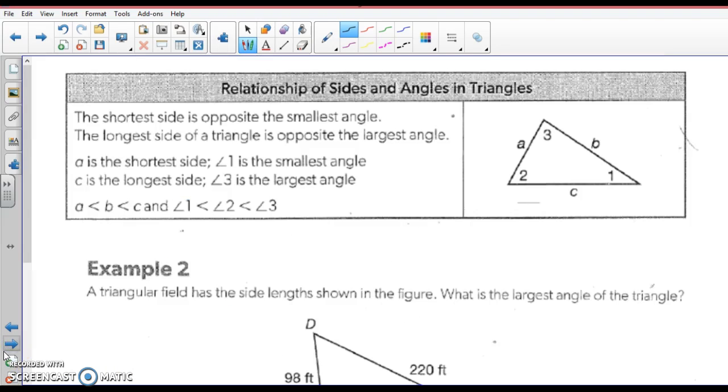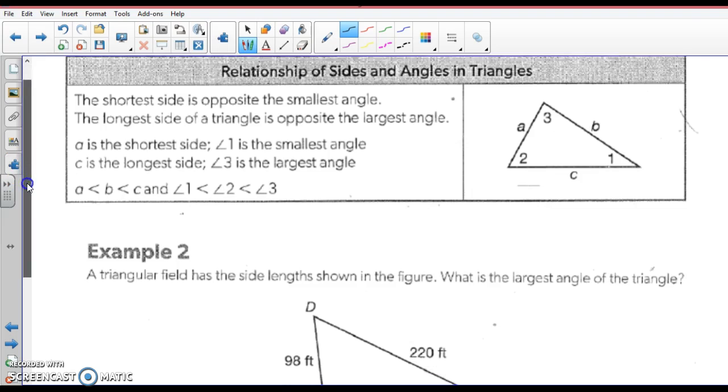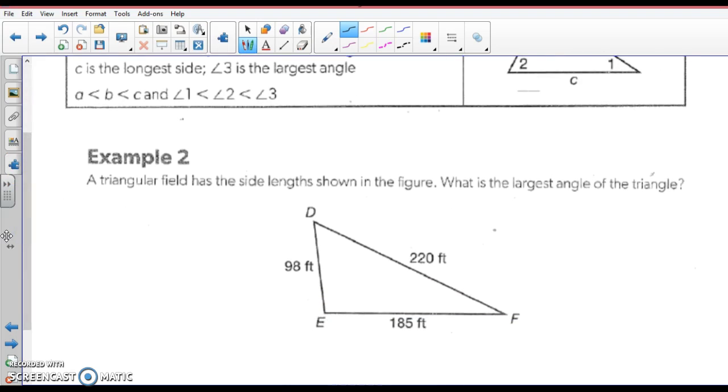Alright. Now, you can read through this, but this basically tells the longest side in a triangle is opposite the biggest angle, and the shortest side is opposite the smallest angle. So this triangle field has the angle shown in the figure. What is the largest angle? Well, this is the largest side, so I'm going to go opposite that. The largest angle is E. Now, if I asked you what the smallest angle was, but it doesn't do that, but let's do it. Smallest angle would be opposite the smallest side. So here's the smallest side. Smallest angle is F.